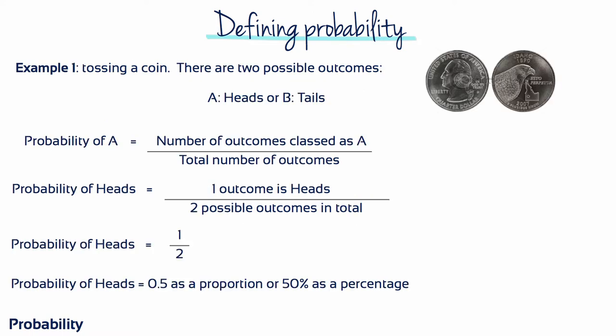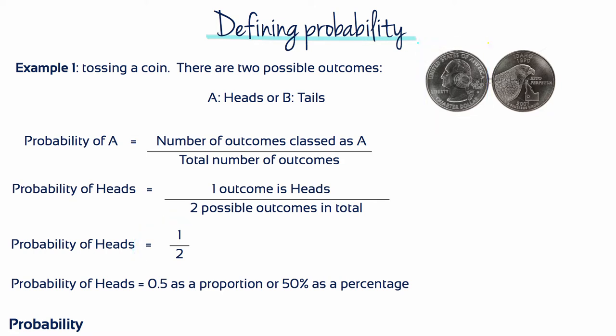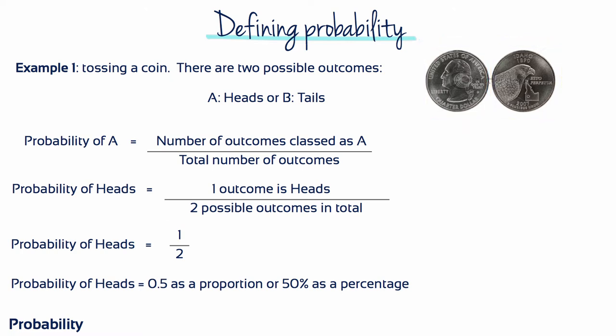For example, if you're tossing a coin there are two possible outcomes: heads or tails. The probability of getting heads is 1 in 2, because only one outcome qualifies as heads and there are two possible outcomes in total. The 1 in 2, or 50-50 probability, can be expressed as a proportion — 0.5 — or as a percentage, 50%.